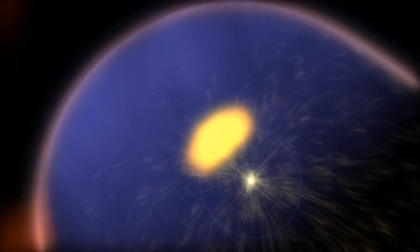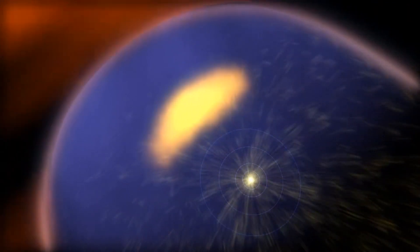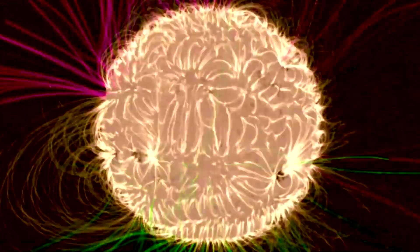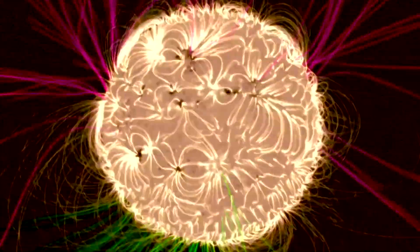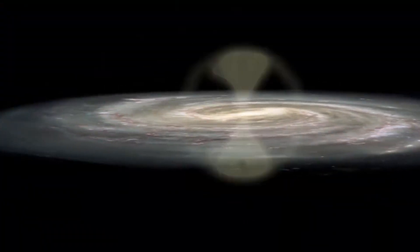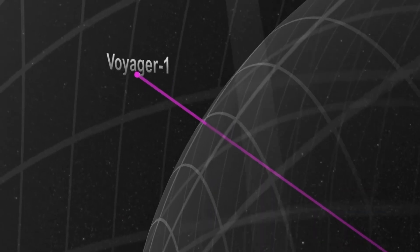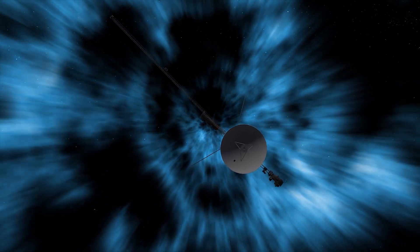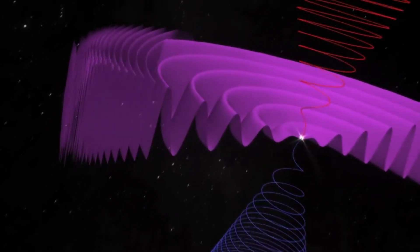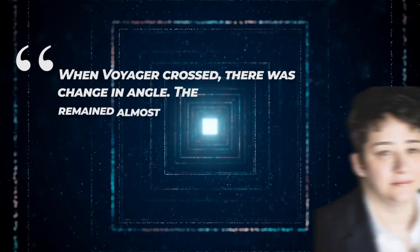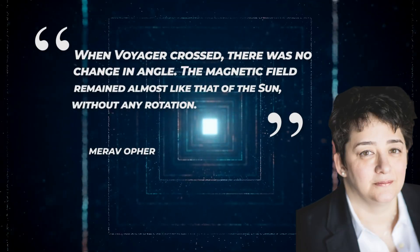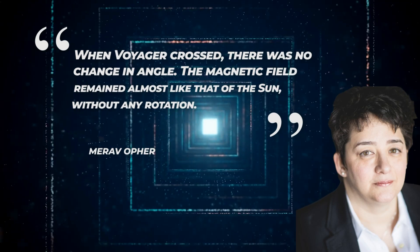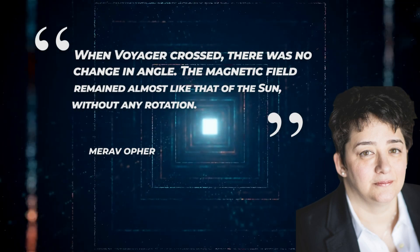The data gathered by Voyager 1 and 2 on magnetic fields at the heliopause perplexed scientists. The expectation was that there would be a change in the magnetic field direction when the solar magnetic field met the galactic magnetic field. However, neither Voyager 1 nor Voyager 2 detected any alterations in the direction of the magnetic field. As Ofer explained, when Voyager crossed, there was no change in angle. The magnetic field remained almost like that of the Sun, without any rotation.